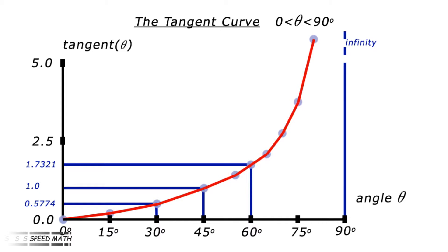Similar to before, there are three angles that have important values: 30 degrees, 45 degrees, and 60 degrees. The numbers down the side don't look particularly easy to remember, but there is a way to actually work them out.